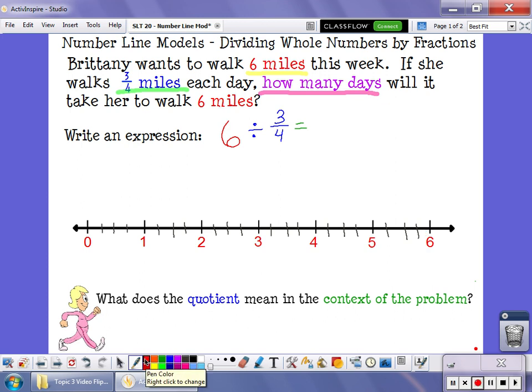Now it's time for us to answer the question. Six divided by three-fourths means I'm looking for groups that are three-fourths of a mile long. So if I think about that, this first line would be one-fourth, two-fourths, three-fourths. So right here is one day of walking for Brittany.